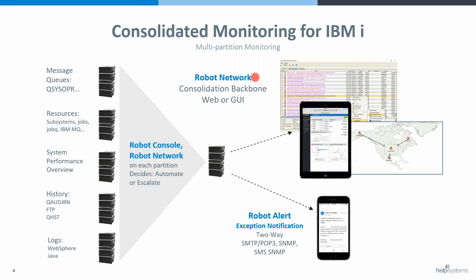Another point about Robot Network: if you're a Robot Schedule customer with multiple partitions, you can also do cross-partition reactivity using Robot Network as the backbone. And with Robot Network you have something called the Product Master — it allows you to maintain Console message sets and Robot Schedule jobs in one place. You create it in the master and share it out to everybody.